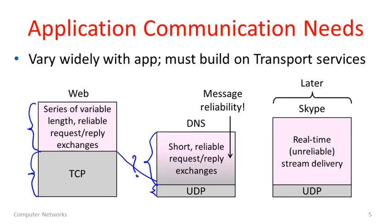On the right-hand side I have an example of Skype, which also builds on UDP. Skype is really a stand-in for a popular real-time conferencing application, sending audio and video between live participants. The reason to build on UDP is that there's no need for reliability — the communication needs to be real-time. If the information doesn't arrive quickly by a deadline, there's no point retransmitting it for reliability because everyone will have already seen a glitch and moved ahead. So Skype needs to implement a real-time stream delivery communication pattern on top of UDP.